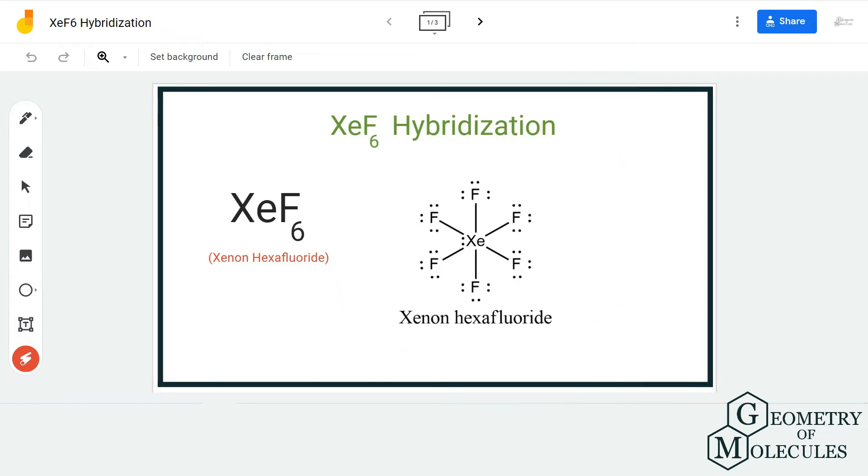So this is the Lewis structure of XeF6 molecule in which xenon atom is forming six bonds with six fluorine atoms over here. Apart from that, it also has one lone pair of electrons because it can have expanded octets.